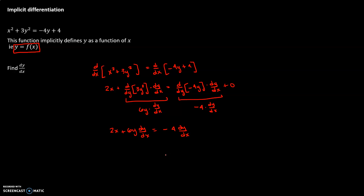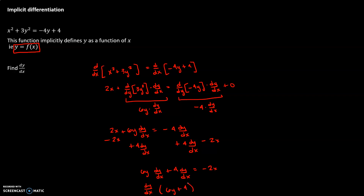To finish, we want to write dy/dx equals something, so we move the negative 4(dy/dx) to the left side and subtract 2x from both sides. We get 6y(dy/dx) plus 4(dy/dx) equals negative 2x. Factoring out dy/dx leaves 6y plus 4, and dividing both sides by 6y plus 4 gives our final answer: dy/dx equals negative 2x divided by 6y plus 4.